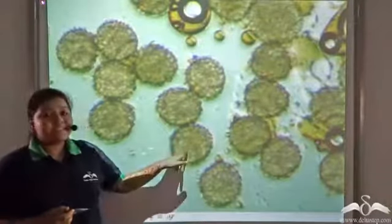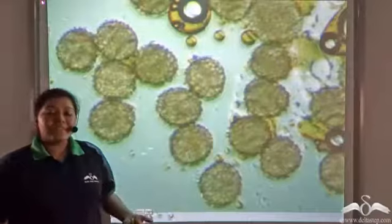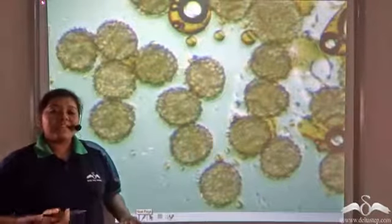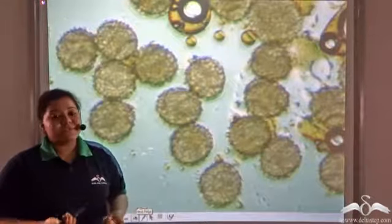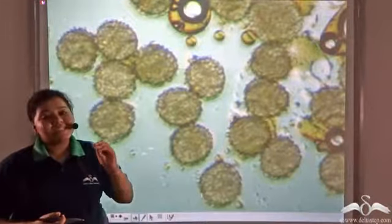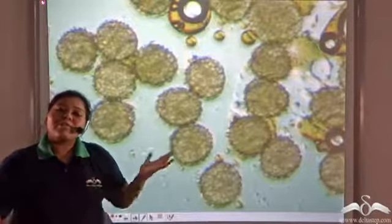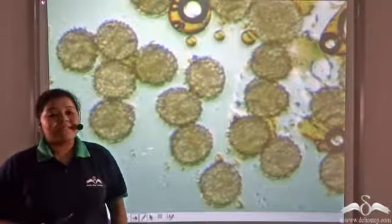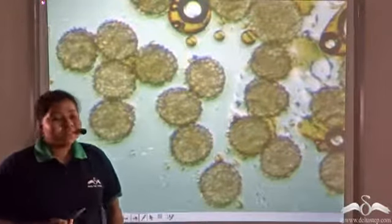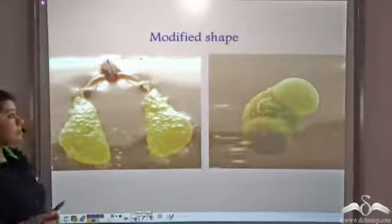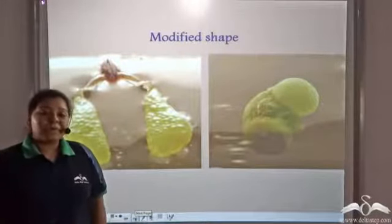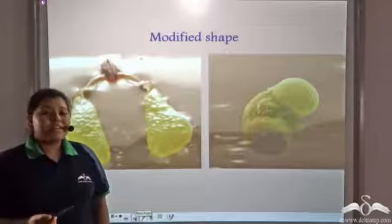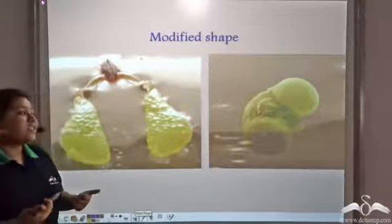For pollen grains to float on water, they need to have a smaller mass for a fixed volume, or if the mass is fixed, then the volume needs to grow bigger. So for pollen grains to float on water, they have a modified shape.